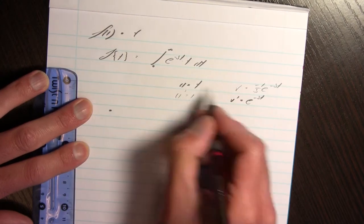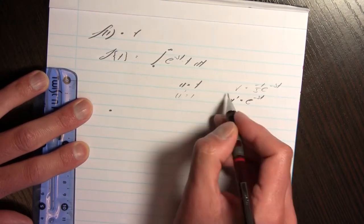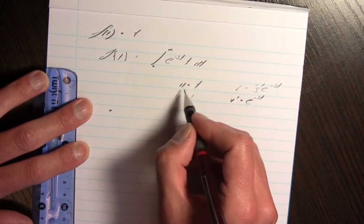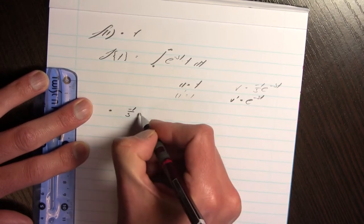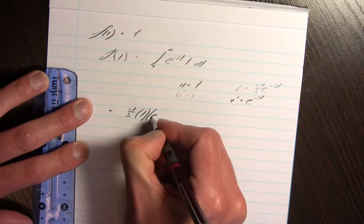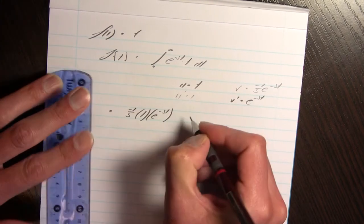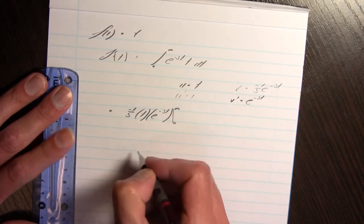This leaves me with uv minus u prime v. So this is going to leave me with uv that's negative 1 over s. It's going to leave me with the t and it's going to leave me with an e to the power negative st and that goes from 0 to infinity. Remember it goes from 0 to b and I'm taking the limit of that.